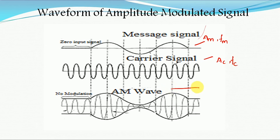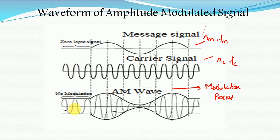This AM wave is the resultant of the modulation process. When there is no message signal — zero input — the modulation is not done, meaning the same carrier signal appears at the output. When the message signal is applied, the modulation process occurs and we obtain an amplitude modulated wave. This waveform depends on the modulation index value. We will now derive how the time domain AM signal is derived from the message signal and carrier signal.